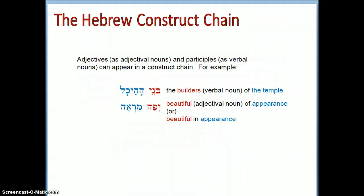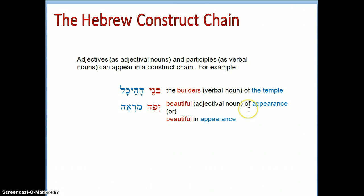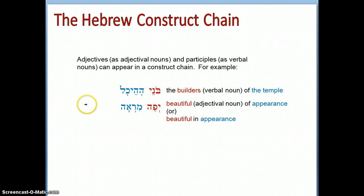Adjectives and participles can also appear in a construct chain. For example, 'the builders of the temple,' or 'beautiful of appearance' — notice that 'in' is used here instead of 'of' because it sounds more natural in English.